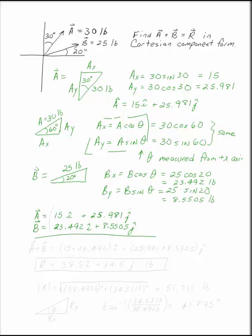So, when it comes to adding these up, the resultant, A plus B, you find by adding the I's and adding the J's. So what we end up with is 15 plus 23.492I, and 25.981 plus 8.5505J.